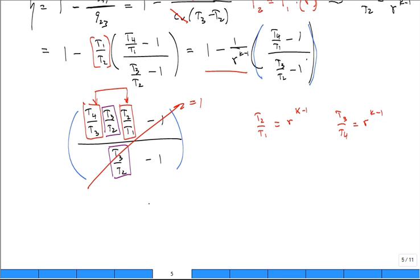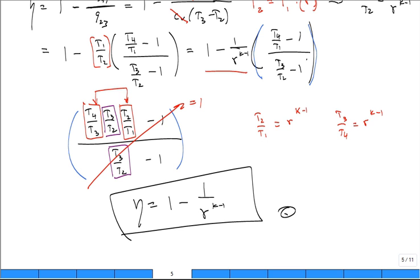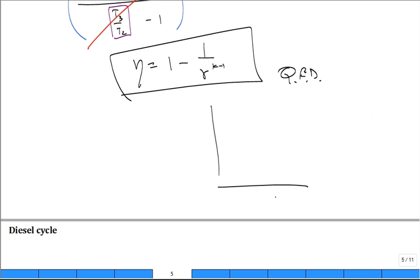So what you set out to show: 1 minus 1 over the compression ratio to the K minus 1. What you can do with this analytic expression is you can plot the compression ratio for Otto cycle versus the thermal efficiency. And you see that for low compression ratios, it's lower and then it goes up. So there's a benefit to having a high compression ratio gasoline engine.